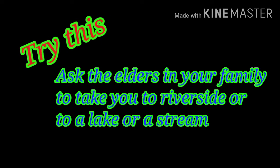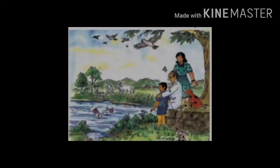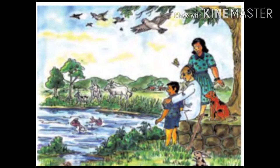Try this. Ask the elders in your family to take you to a riverside or to a lake or stream. Students, here in your textbook a very nice picture is given of riverside observation and it is asked to you to make a list of all the living things you see there. If you do not know the names of any of the living things you see, make a note of them describing their shape, color, sound, shelter, etc., or draw their pictures.